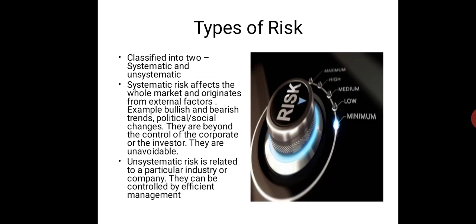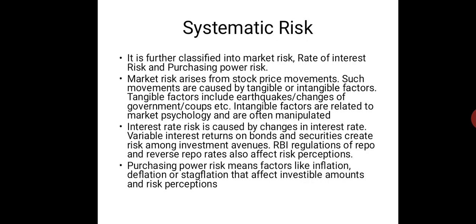Risk can be classified into two types: systematic risk and unsystematic risk. Systematic risk affects the whole market and originates from external factors, e.g. bullish and bearish trends. A bull market is a market that is on the rise and where the economy is sound, while a bear market exists in an economy that is receding where most stocks are declining in value. Political or social changes are beyond the control of the corporate or the investor — they are unavoidable. Systematic risk is further classified into market risk, rate of interest risk, and purchasing power risk.